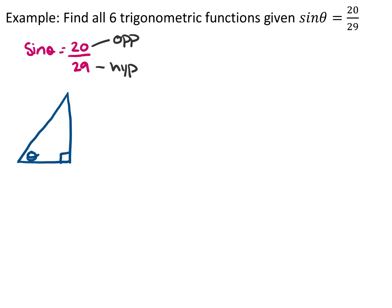So I draw my right angle triangle, I put theta in, so the opposite is going to be 20, and the hypotenuse is going to be 29.